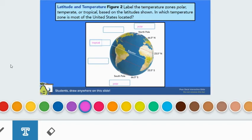Last, let's label the temperate zones. So between the tropical and polar zones are the temperate zones. In summer, the sun's rays strike the temperate zones quite directly. In winter, the sun's rays strike at a lower angle. The United States is located in the temperate zone.